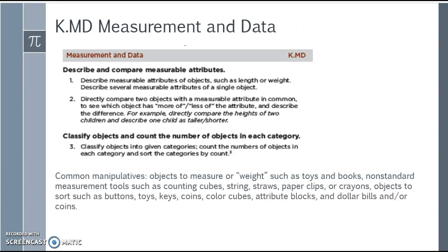Let's move on to measurement and data. Students need to describe measurable attributes of objects such as length or weight, and describe several measurable attributes of a single object. They need to compare two objects with a measurable attribute in common to see which has more or less of the attribute and describe the difference — for example, comparing heights of two children and describing one as taller or shorter. They also need to classify objects into given categories, count objects in each category, and sort the categories by count.